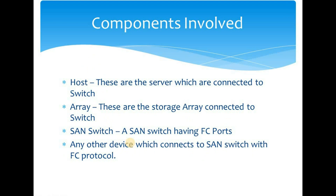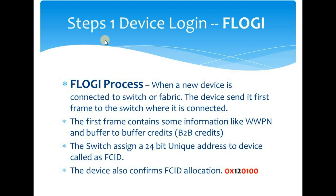Step one is FLOGI, also called the Fabric Login process. When a new device is connected to the SAN switch or fabric, it sends its first frame to the switch it is connected to. If connected to a core switch, the first frame goes to the core switch; if connected to an edge switch, it goes to the edge switch. This first frame contains information like the WWPN and Buffer-to-Buffer credits.